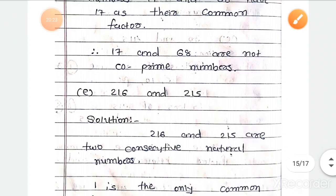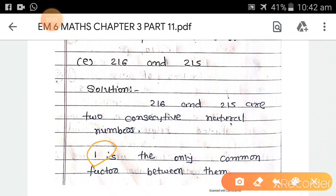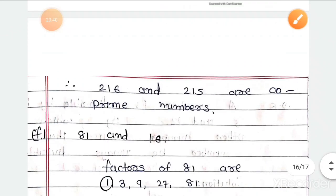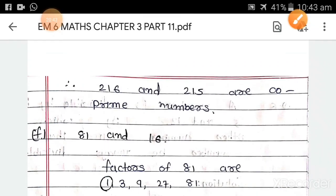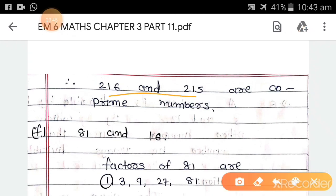Part e: 216 and 215. These are two consecutive natural numbers. One is the only common factor between them. Therefore, 216 and 215 are co-prime numbers.